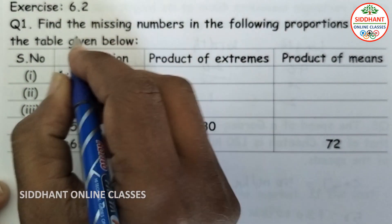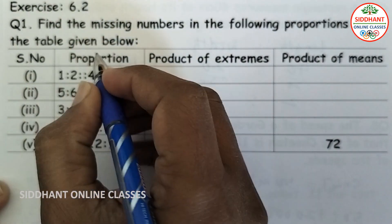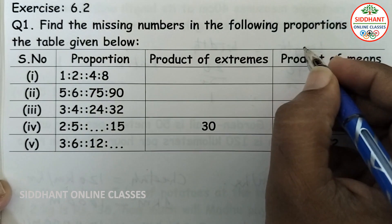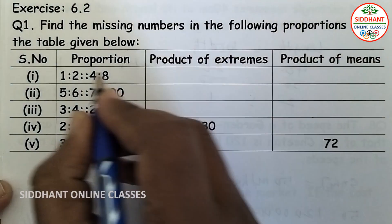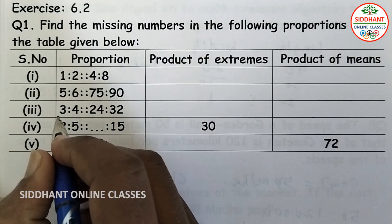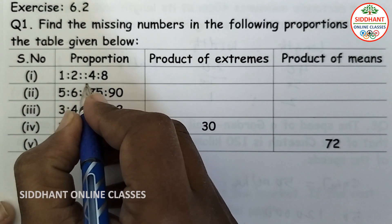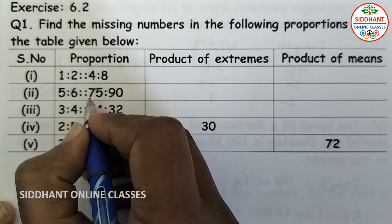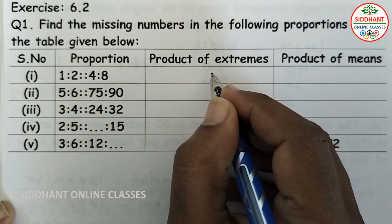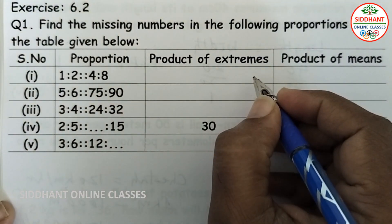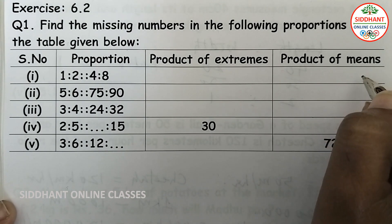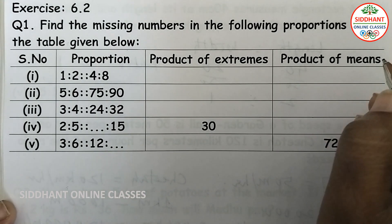Exercise 6.2, question number one: find the missing numbers in the following proportions in the table given below. Here the proportions are given and we are going to find out the product of extremes and product of means.